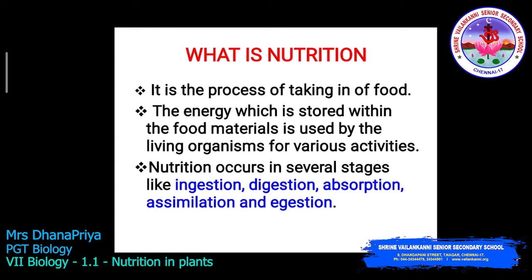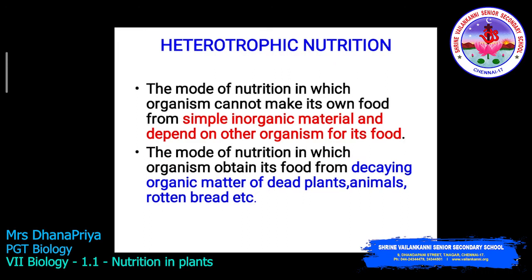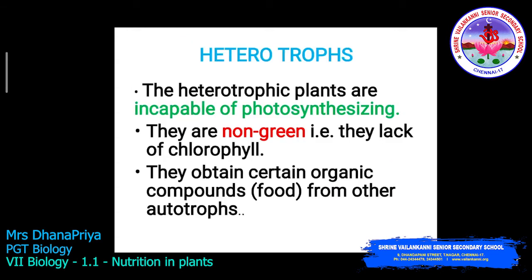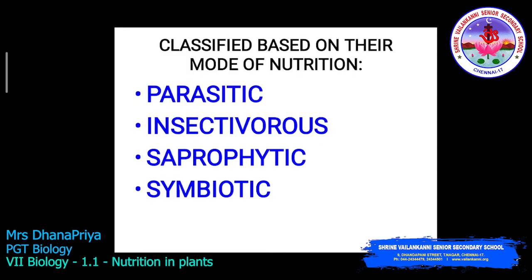Heterotrophic nutrition is the mode of nutrition in which an organism cannot make its own food from simple inorganic material and depends on other organisms for food. The organism obtains food from decaying organic matter of dead plants, animals, rotten bread, etc. Heterotrophic plants are incapable of photosynthesizing — they are non-green, lacking chlorophyll — and they obtain certain organic compounds from other autotrophs.